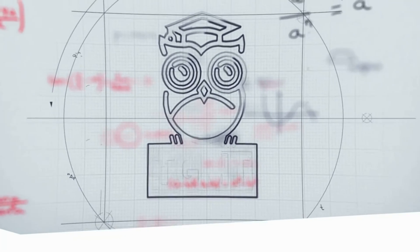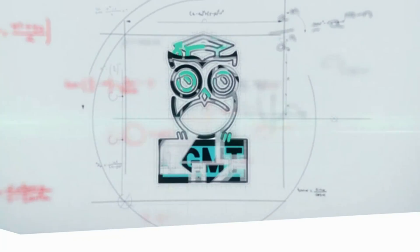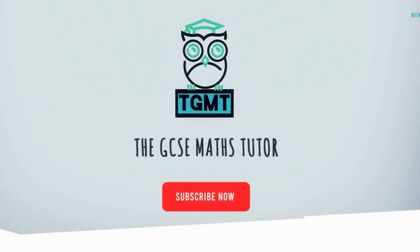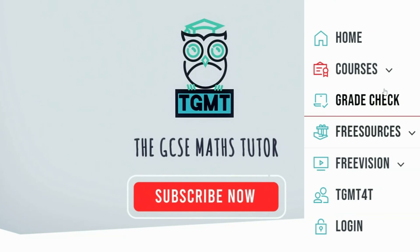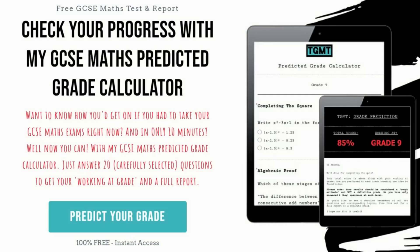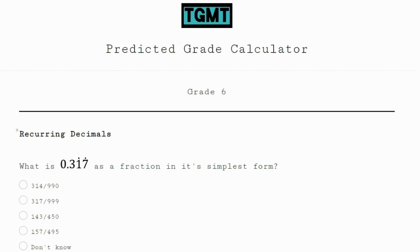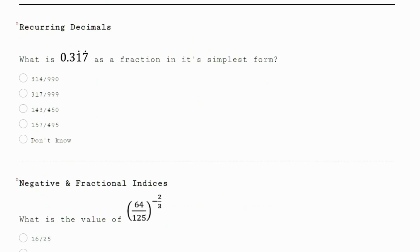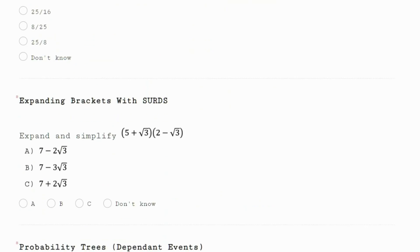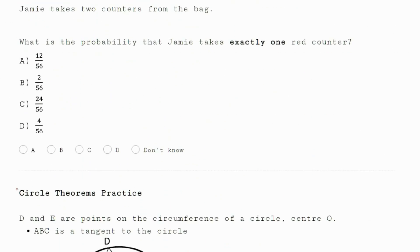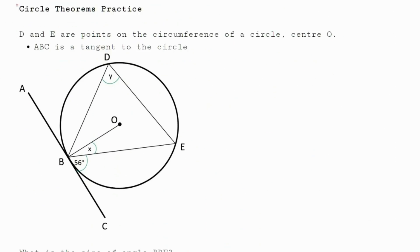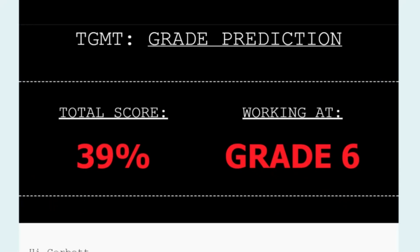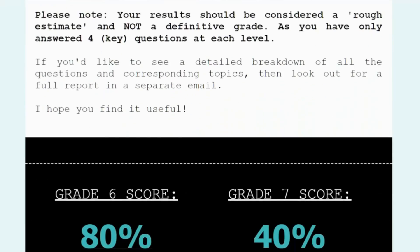Tip one: my grade calculator. Go to my website and complete my grade calculator to get your estimated working-at grade, so you can get an idea of your starting point. You'll be able to answer common exam-style questions from either of the exam tiers — higher or foundation — and once you've completed that, you will receive a report which gives you that estimated working-at grade, so you can start to look at your next steps.